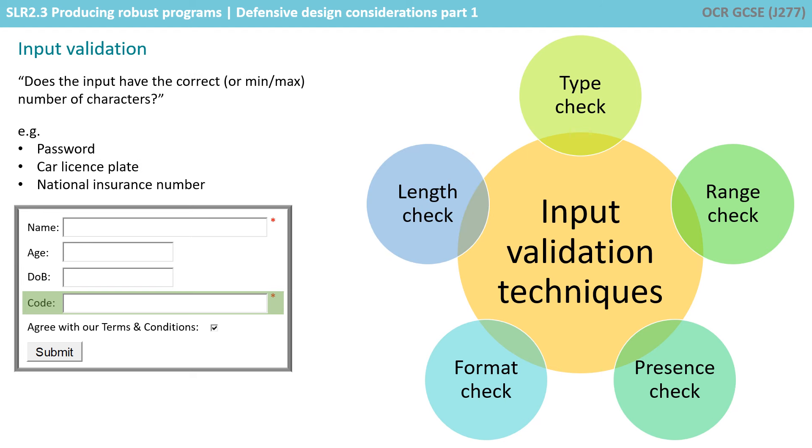And finally, a length check. Some data items must be a specific number of characters or over a specific minimum number of characters. Barcodes are 13 digits, for example. And passwords are often required to be at least six characters or more.